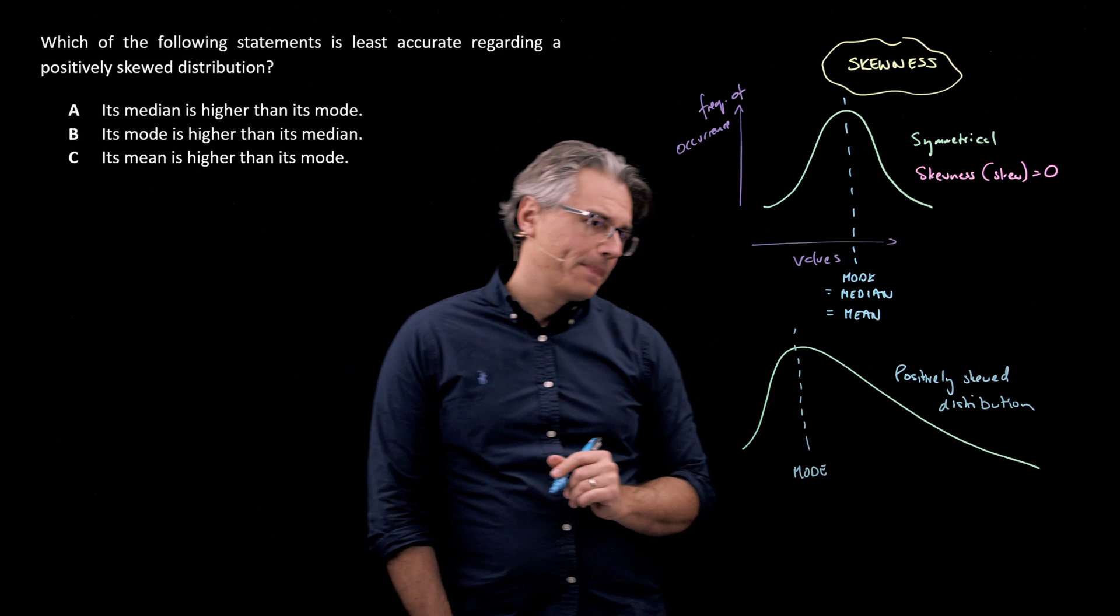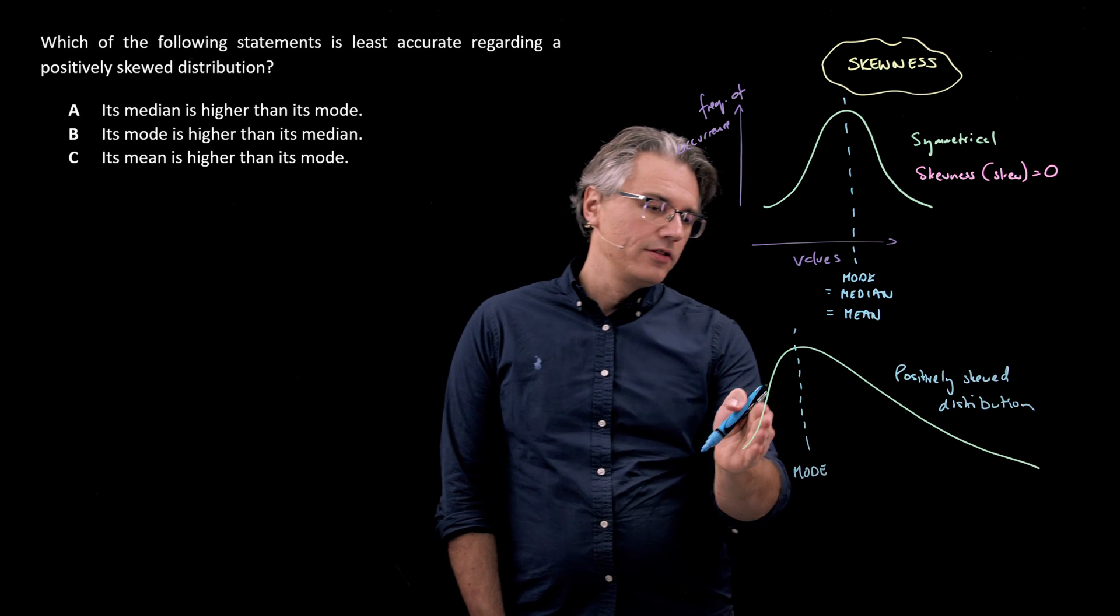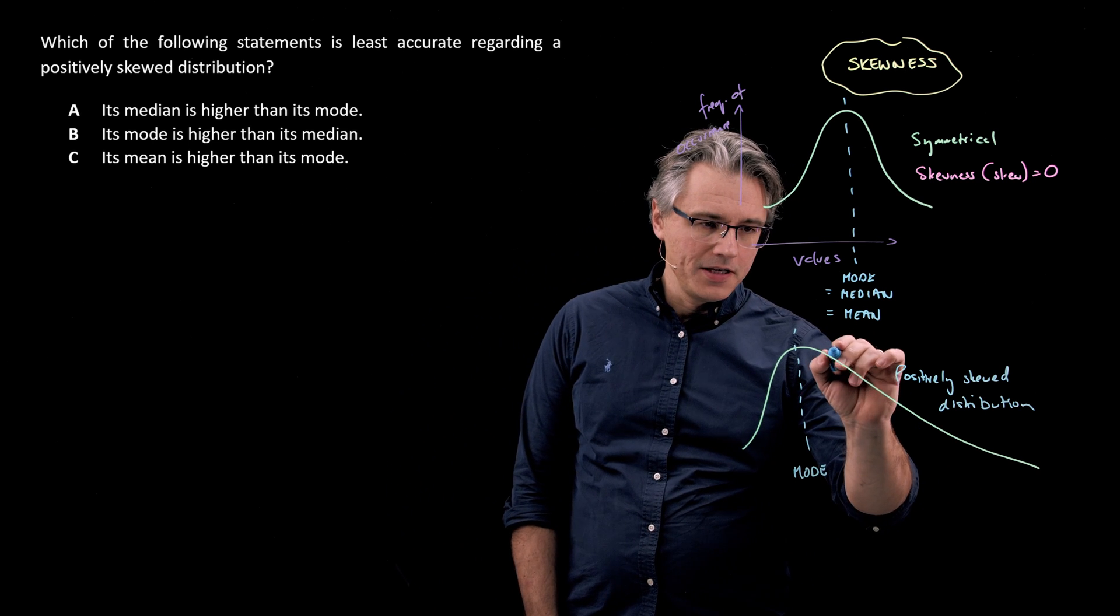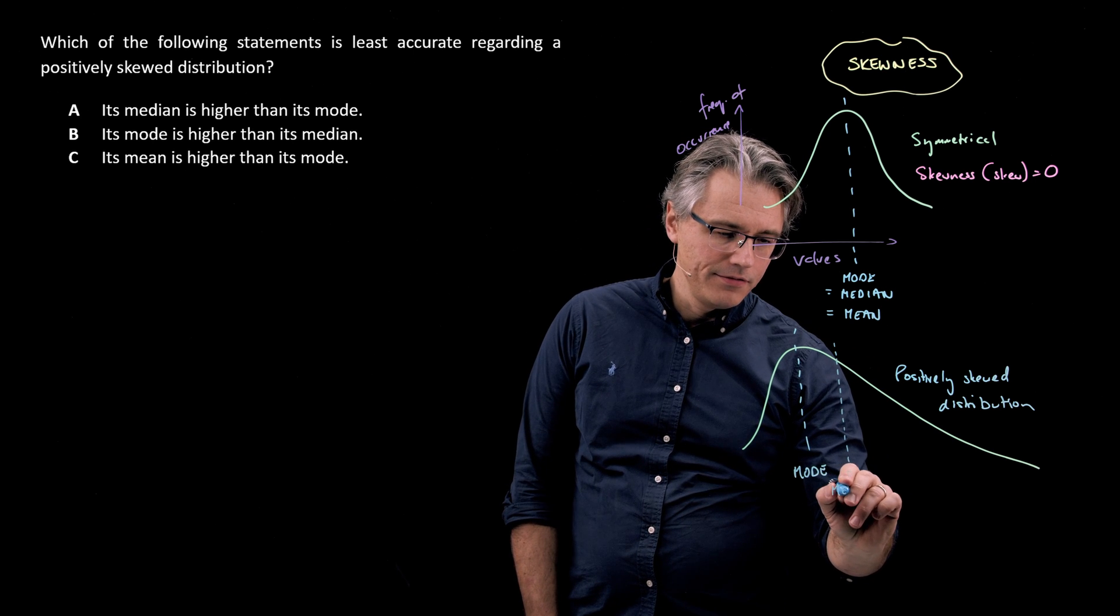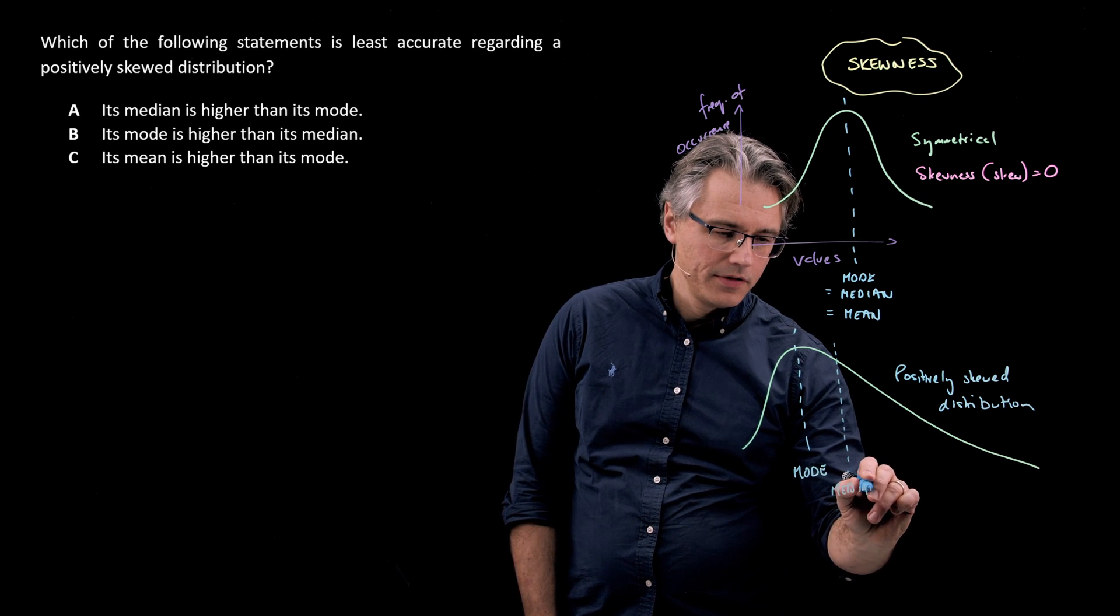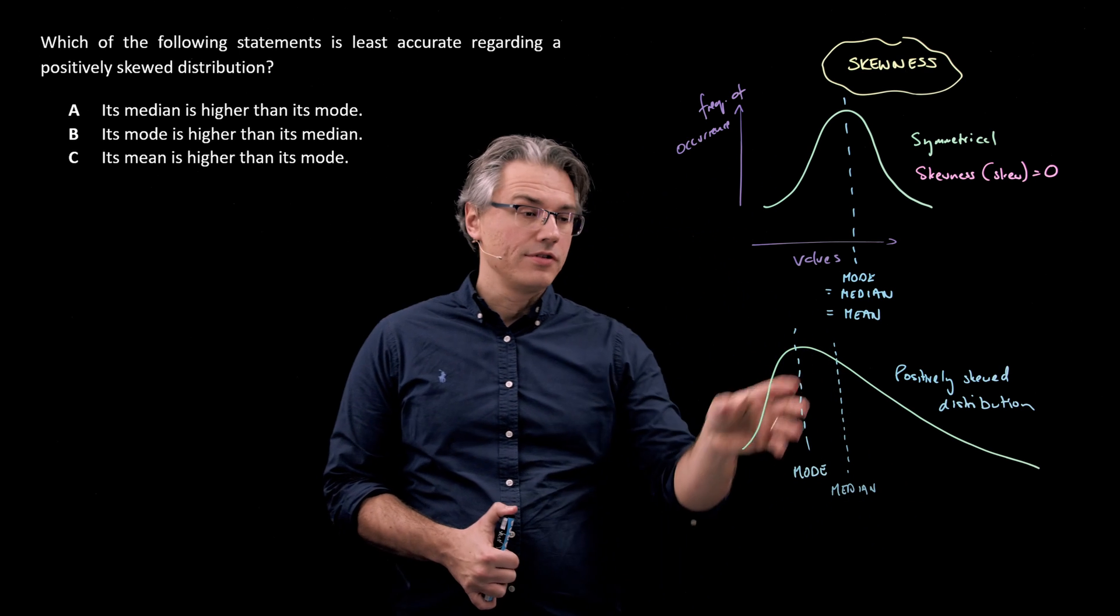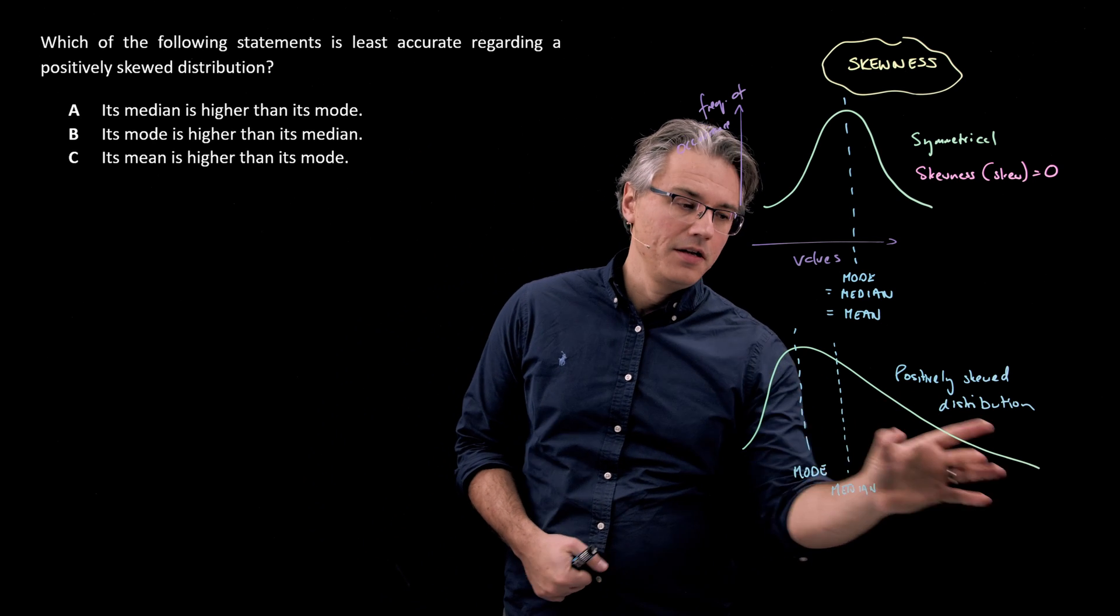However, because there is an unequal number of observations to the left and to the right hand side, we're going to have a median which is at least slightly to the right of the mode, and this is what's going to divide our distribution into halves in terms of the number of observations to the left and the right.